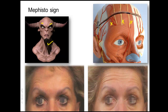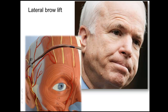Over-treating frontalis might result in brow ptosis, because frontalis is the dilator mechanism here. If it is over-treated, the sphincter mechanism will come into action and the tone of orbicularis oculi — the orbital part — will result in brow ptosis. To reduce the activity of orbicularis oculi, injection is given in the superior and lateral aspect of the muscle, creating a lifting effect — what we call a lateral brow lift.